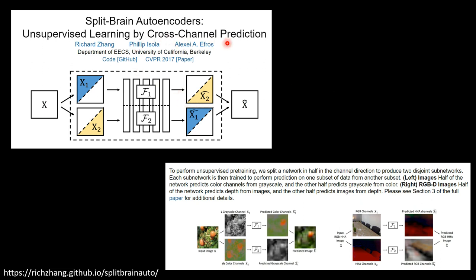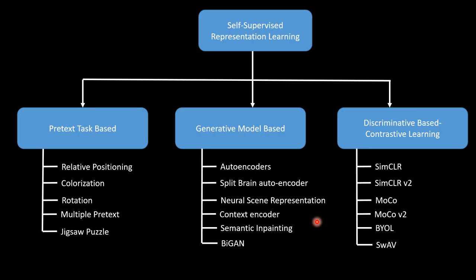Another method is called Split Brain Autoencoders. The idea is based on autoencoders but learning occurs via cross-channel prediction. We have two subsets of input x1 and x2, and two sub-networks f1 and f2: network f1 is tasked to predict x2 and f2 is tasked to predict x1. For example, if the input has L and AB color spaces, f1 predicts the AB color space and f2 predicts the L color space, and these are combined. These are some of the generative approaches, and then there is also the discriminative or contrastive learning based approaches.